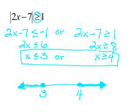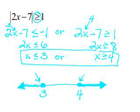We can check these solutions by substituting back. Substituting 3: 2 times 3 is 6, minus 7 is negative 1. Is negative 1 less than or equal to negative 1? Yes — true, giving us a solid point. Substituting 4: 2 times 4 is 8, minus 7 is 1. Is 1 greater than or equal to 1? Yes — true, so it is part of our solution and we have a solid point on the number line.